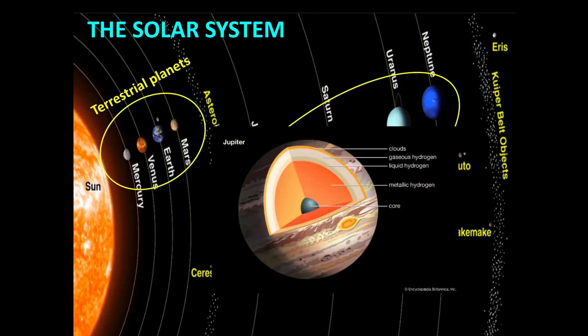Inside the gaseous planets there are rocky cores of about 10 to 20 Earth masses. These are planets by themselves.